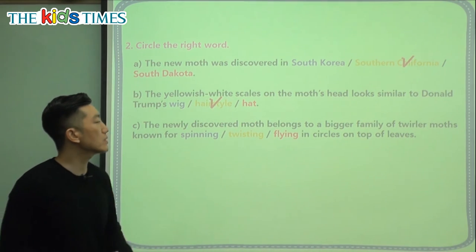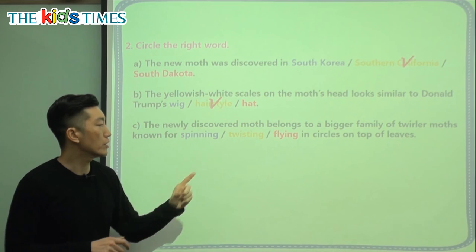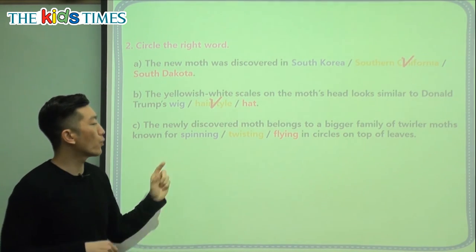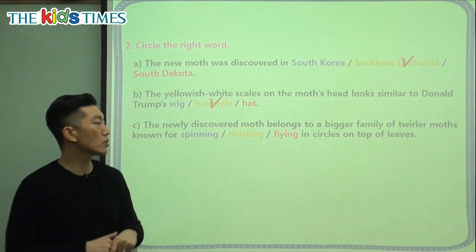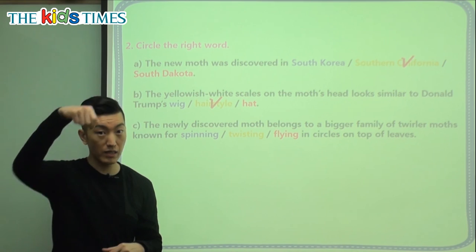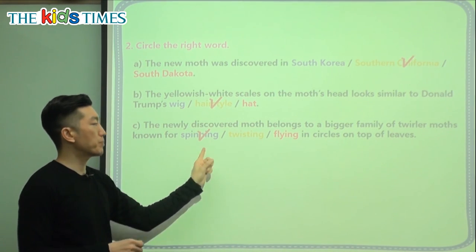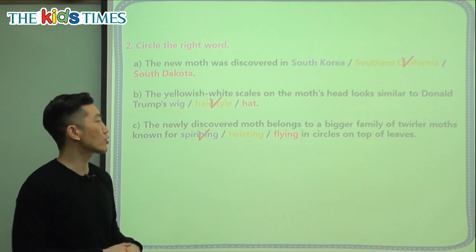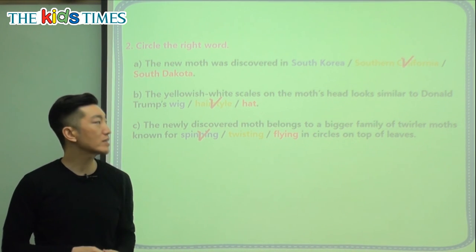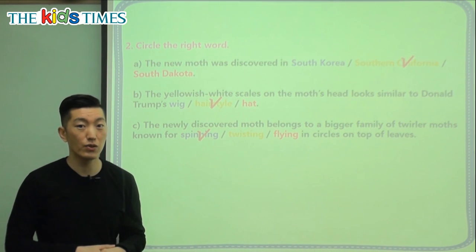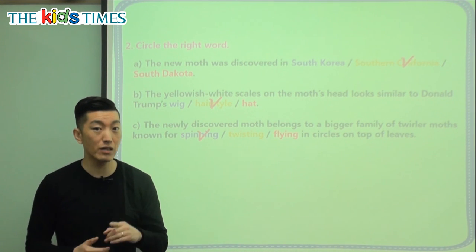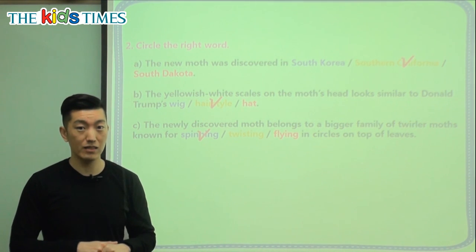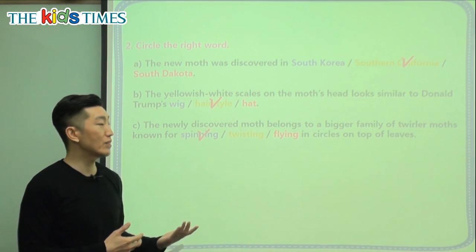The last question: the newly discovered moth belongs to a bigger family of twirler moths. Twirler means spinning — twirler moths are known for spinning in circles on top of leaves. Twirling is like when you dance or turn something. So this new moth, Neopalpa Donaldtrumpi, has yellowish white scales and was found in Southern California. I think the cool thing is: if you become a scientist and find a new insect or animal, you have the honor of naming it. This scientist from Canada decided to name it after the United States president — very cool, very interesting, kind of funny.